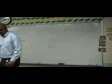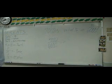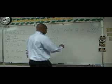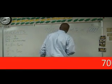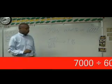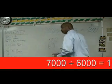7,000 divided by 6,000. Yeah, 1.16. 1.666. And you go over the decimal, 2 decimals. Beautiful.